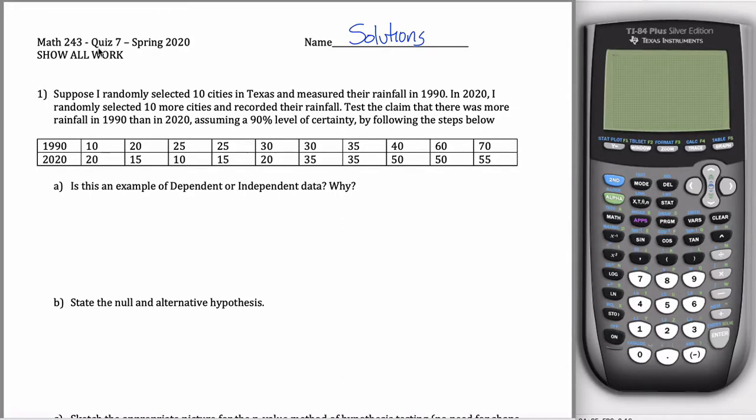All right, here are solutions for Quiz 7 for Math 243. We're dealing with rainfall in Texas. So I randomly select 10 cities in Texas, measured their rainfall in 1990, and then in 2020 I went back and I selected 10 more cities. So that's important.